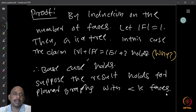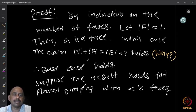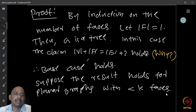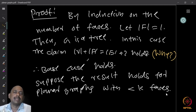The identity says: number of vertices plus number of faces equals number of edges plus 2. For a tree, the number of edges equals number of vertices minus 1. So number of vertices plus 1 (since faces = 1) equals number of edges plus 2, because number of edges is number of vertices minus 1. This confirms the base case.